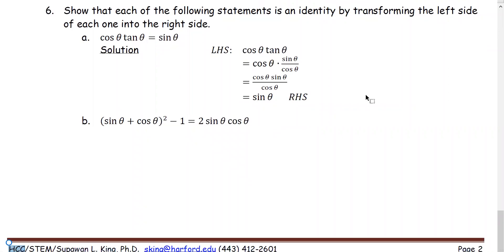Example 6 shows that each of the following statements is an identity by transforming the left side into the right side. We use the notation LHS to represent the left-hand side and RHS for the right-hand side expression. The technique is to look at the expressions on both sides and determine which one is more complicated — we start with that one. For part A, cosine theta times tangent theta looks more complicated than the right-hand side expression, which is sine theta. So we start with cosine theta tangent theta and use appropriate identities to simplify.